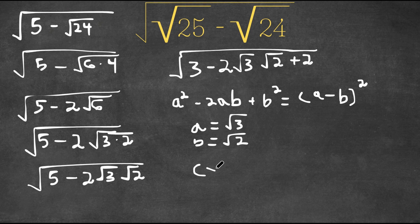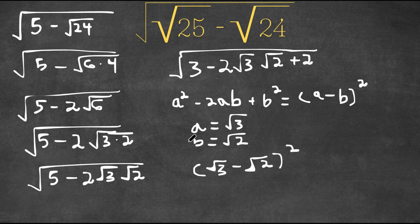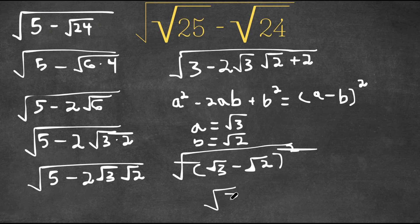So now we have the square root of 3 minus the square root of 2, all squared. However, remember, we're taking the square root of this, and the square root and the power of 2 cancel out. So all we're left with is simply the square root of 3 minus the square root of 2. This is our answer.